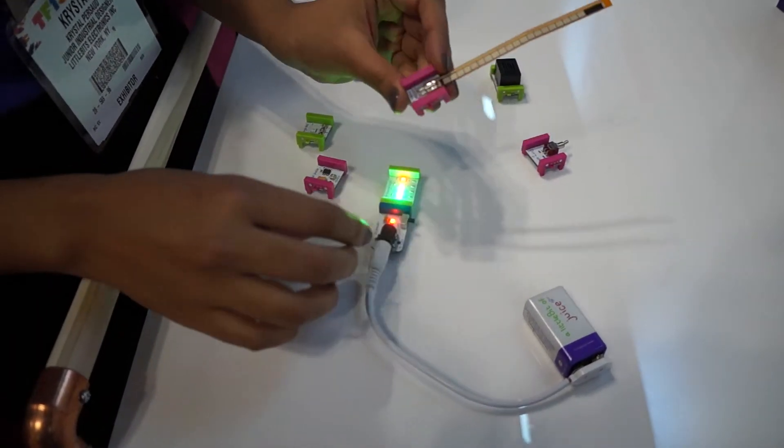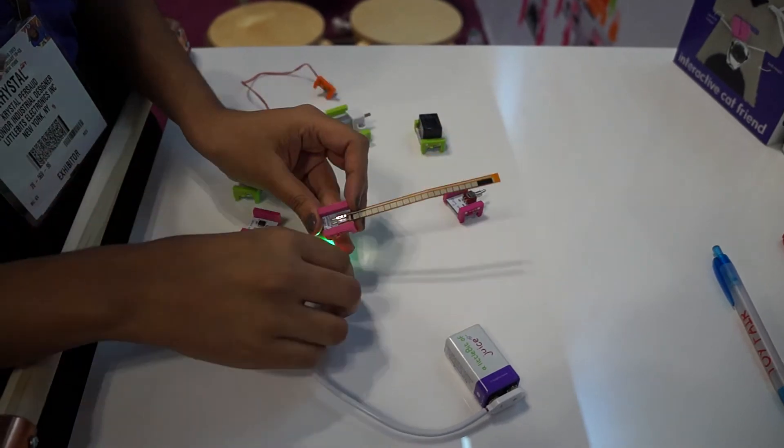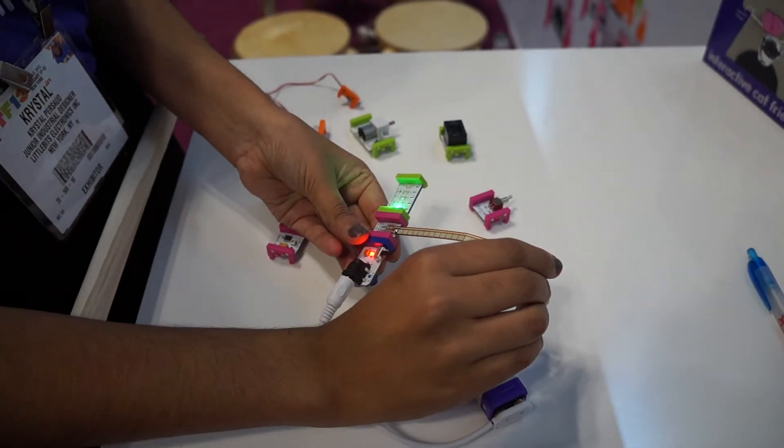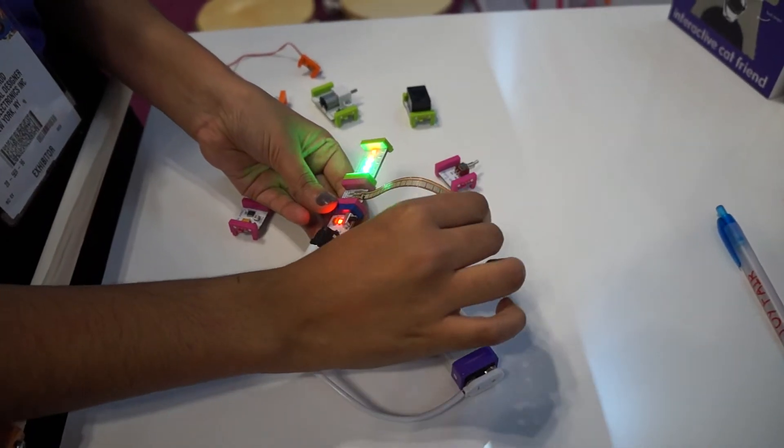The pink ones go in between. This is one of our new bits. It's the bend sensor. So now if I bend this you'll see that the green output turns on.